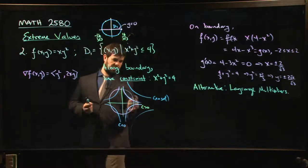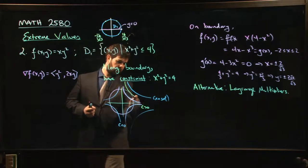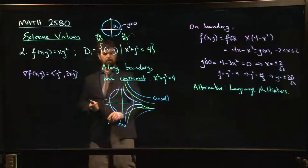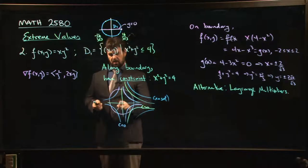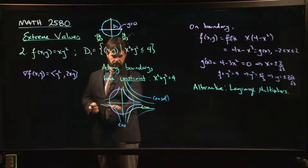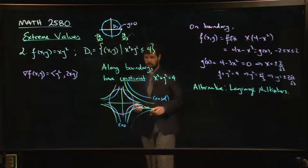So what is going to be the biggest possible value of c that's going to do the job? Well, it's going to be the value of c that gives you the level curve that just barely touches. It's going to give you this one where your level curve is tangent to the constraint curve. And the minimum is going to be the one over here that just barely touches.